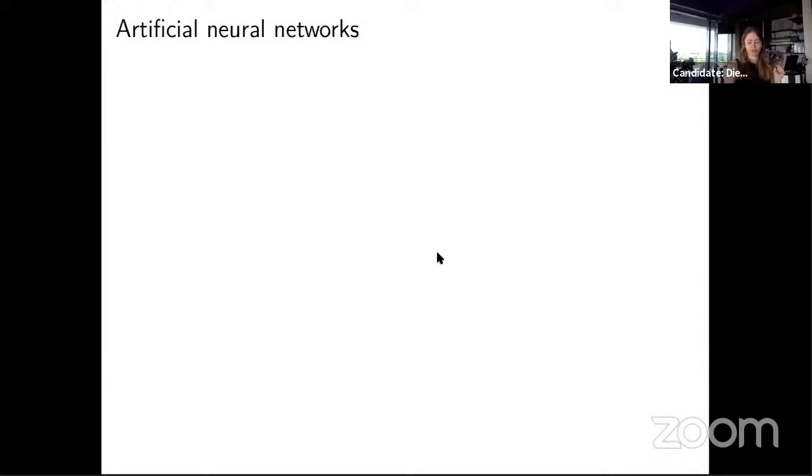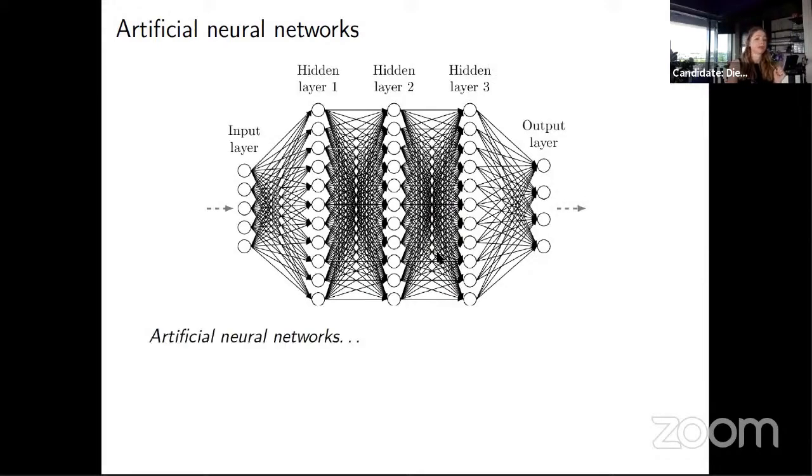First of all, artificial neural networks are surprisingly, remarkably good at processing language. They are currently the best applied model of language that we have. You may not know what an artificial neural network is, but I'm fairly sure that many of you have in some way indirectly used them.